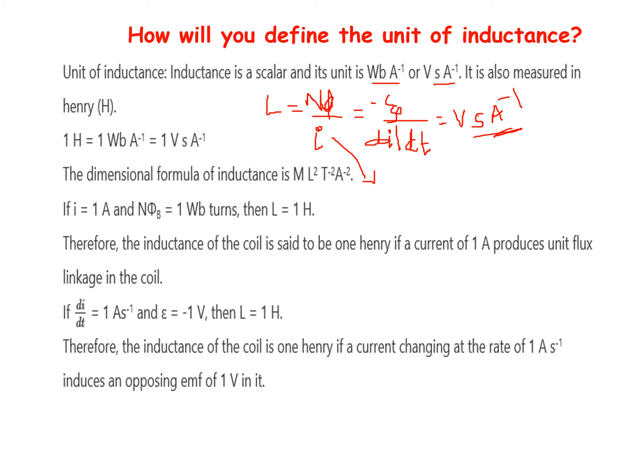The number of turns has no unit. The unit of flux is Weber and the unit of current is ampere, so ampere is in the inverse. Therefore the unit of inductance is Weber ampere to the power of minus 1, and also volt second ampere to the power of minus 1.